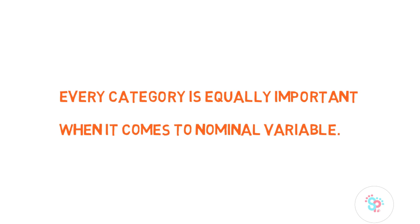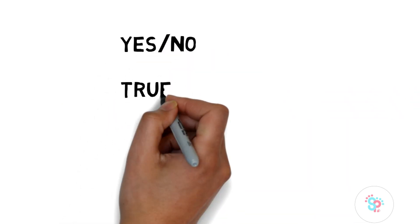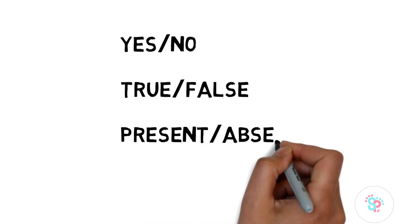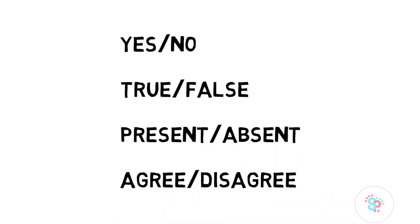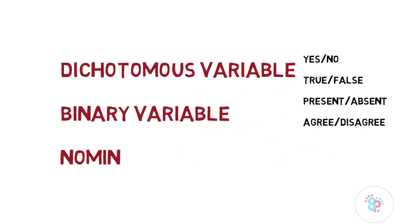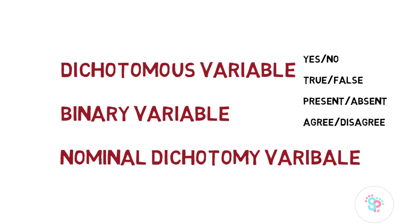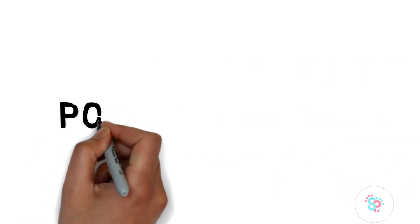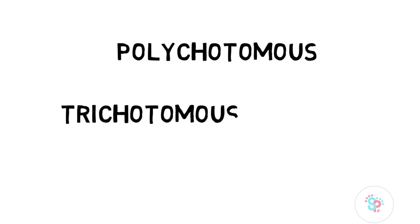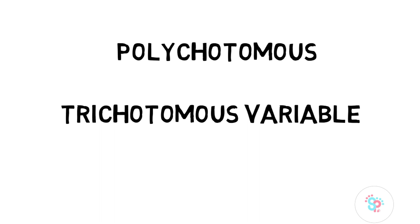When a nominal variable has only two categories — for example, yes or no, true or false, present or absent, agree or disagree — we can specifically call that variable a dichotomous variable, binary variable, or nominal dichotomy variable. When there are two or more categories, we can also call the variable a polychotomous variable, though it still comes under nominal. When there are exactly three categories, some authors call them trichotomous variables as well.